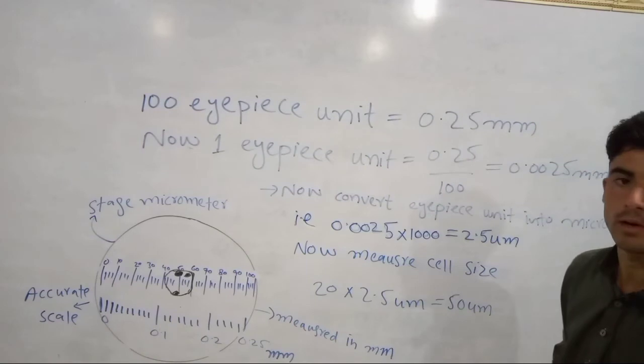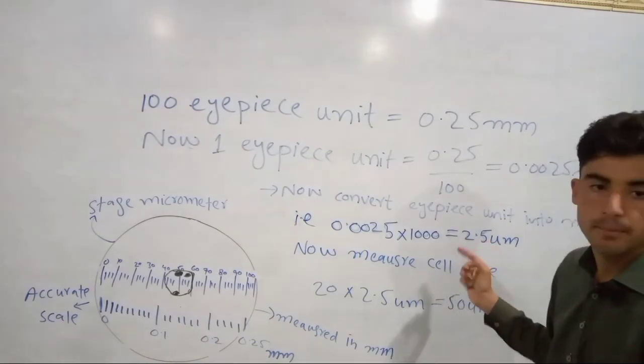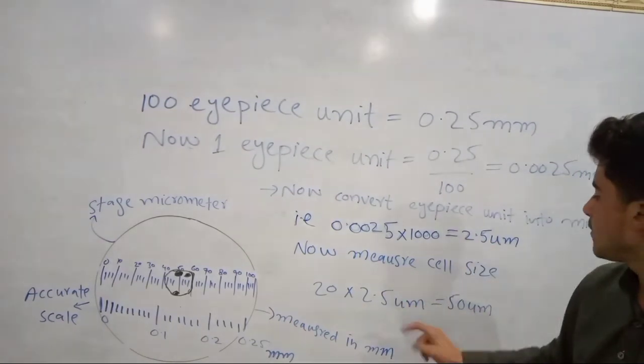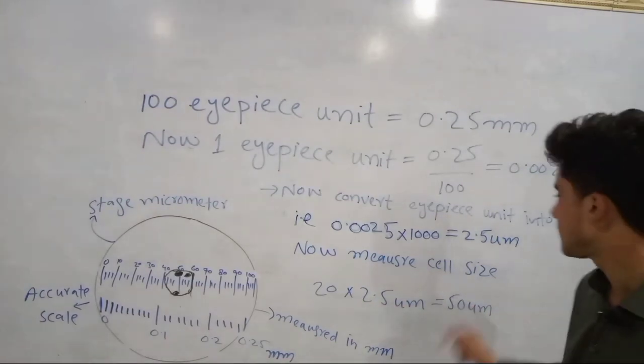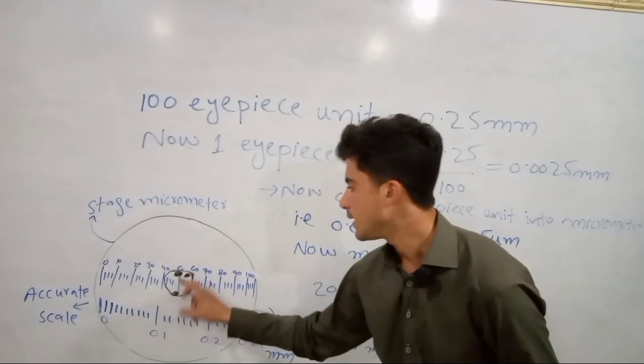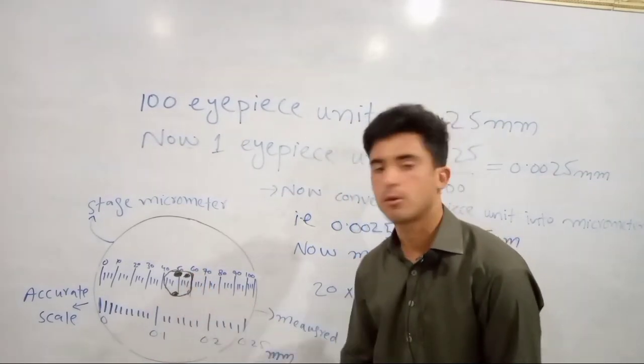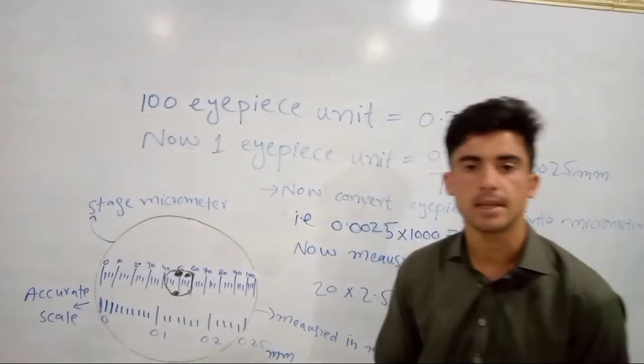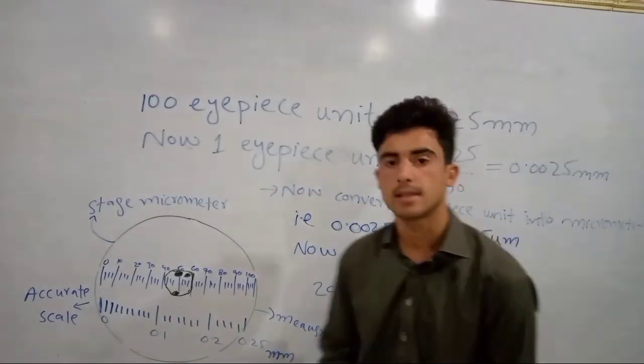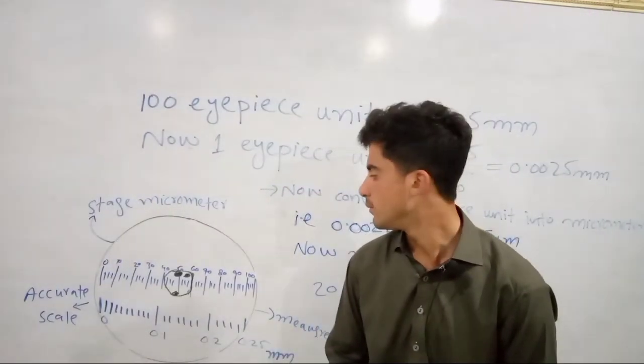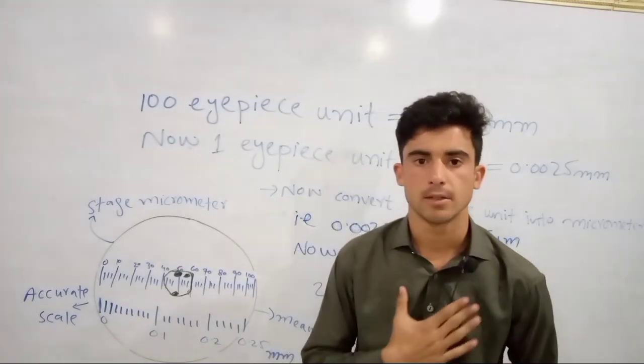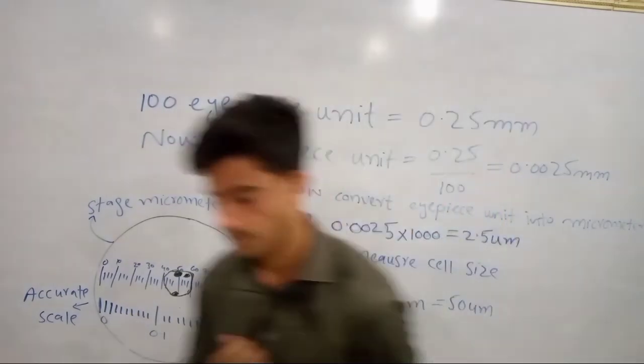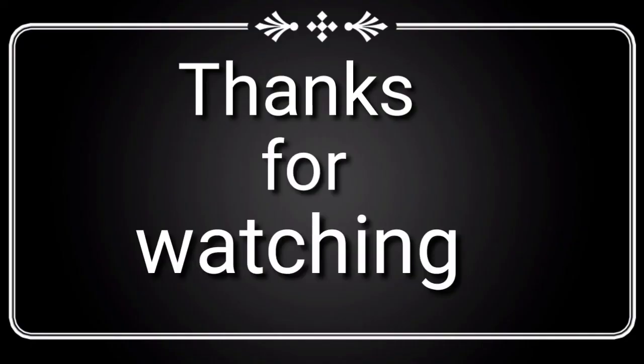Now measure cell size: 20 times 2.5 micrometers equals 50 micrometers. We can calculate 2.5 micrometers per eyepiece unit to determine the actual cell size.